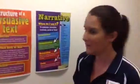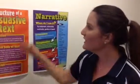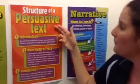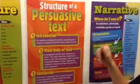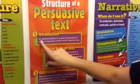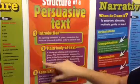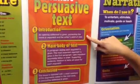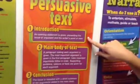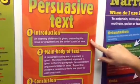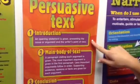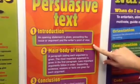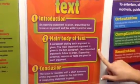Now let's look at the structure of a persuasive text. Number one is the introduction — an opening statement is given presenting the issue or argument and the writer's point of view. Number two is the main body of the text.